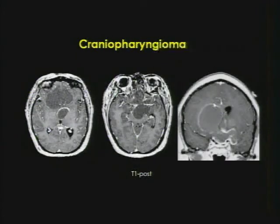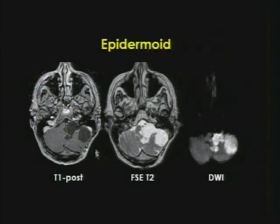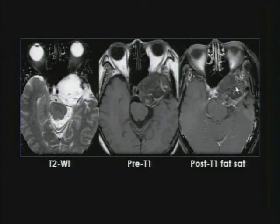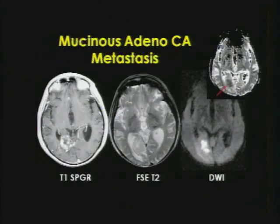Diffusion-positive masses to commit to memory: epidermoid, mucinous adenocarcinoma metastases, pyogenic abscess, and some cellular tumors. A classic epidermoid is extra-axial, follows CSF signal, does not enhance, but shows markedly restricted diffusion — diagnostic of epidermoid. Here's another extra-axial middle fossa mass with complete restricted diffusion — also epidermoid. Mucinous adenocarcinoma metastases also show markedly restricted diffusion.